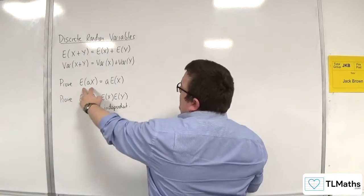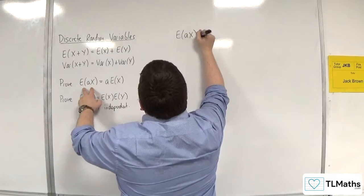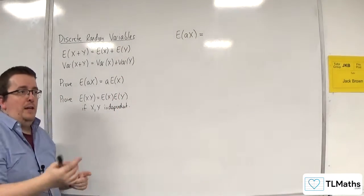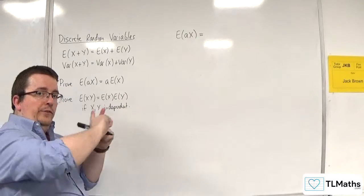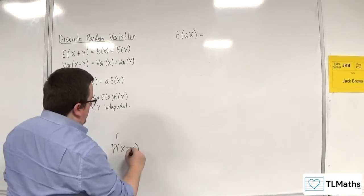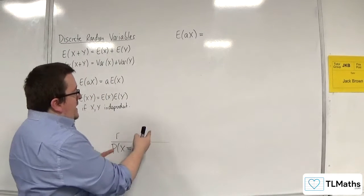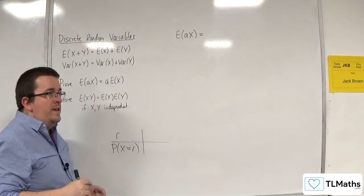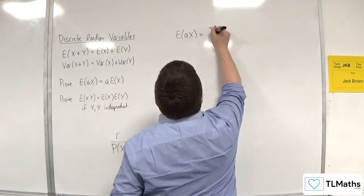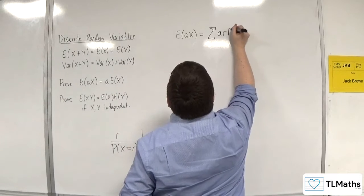The expected value of a times X would just be, well, the a value is being multiplied by each of the r values that are in your table. So, if you had r and probability of X being equal to r, what I'm doing is I'm multiplying a by each of the values that I've got in there.